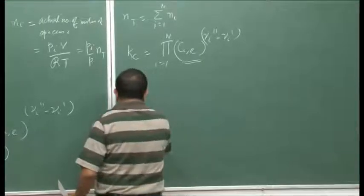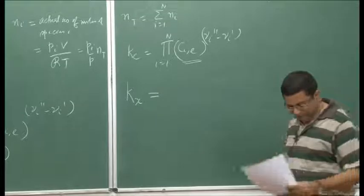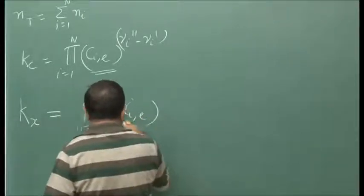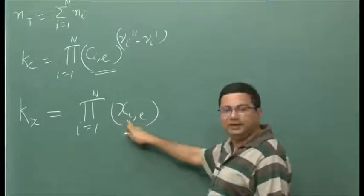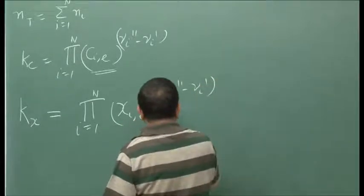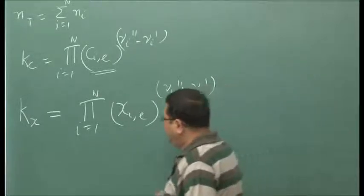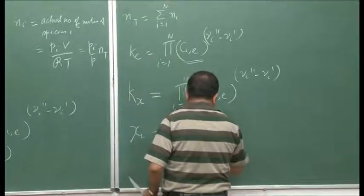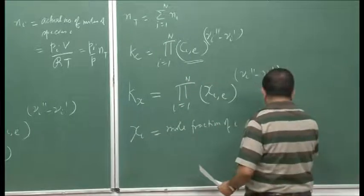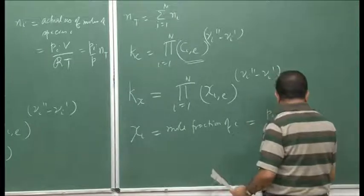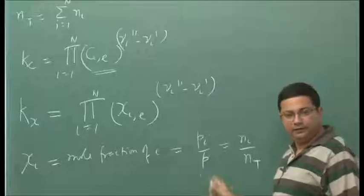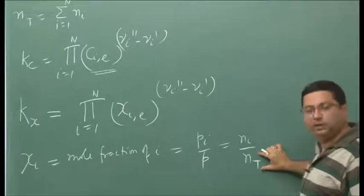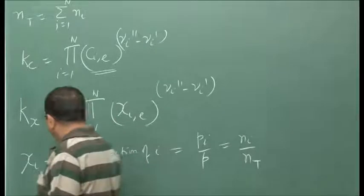Similarly, we can define Kx based on mole fraction — the product of the mole fraction of species i at equilibrium raised to the difference in stoichiometric coefficient. Here, the mole fraction κ_i equals partial pressure divided by total pressure, which is n_i divided by n_t. Pi is partial pressure of species i at equilibrium, p is total pressure, n_i is moles of species i, and n_t is total moles.